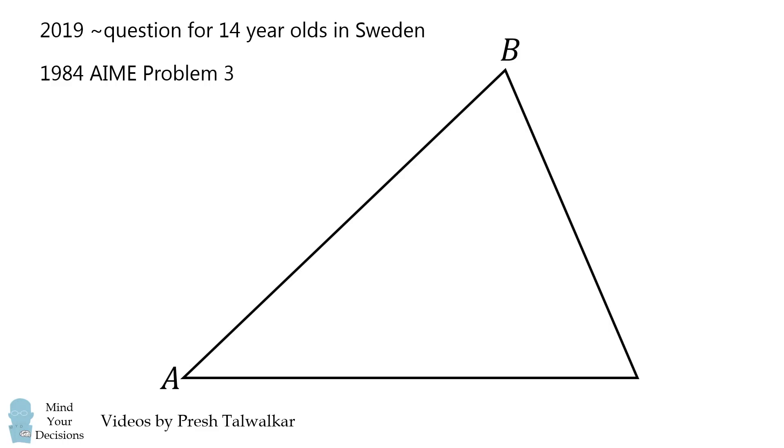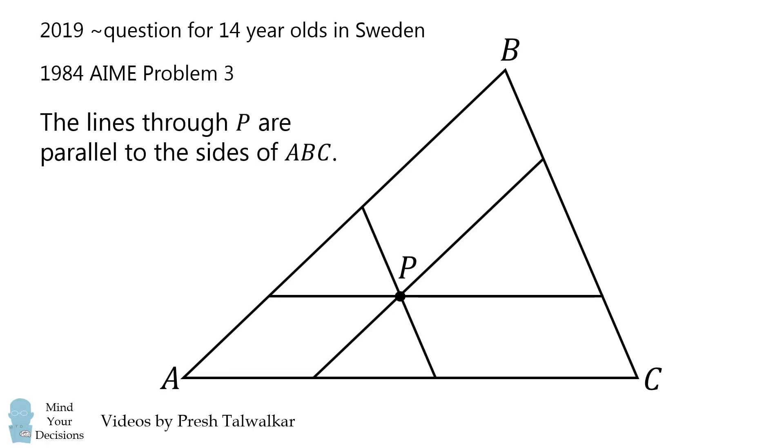In triangle ABC, pick a point P on the interior. Construct lines through P that are parallel to the sides of ABC.